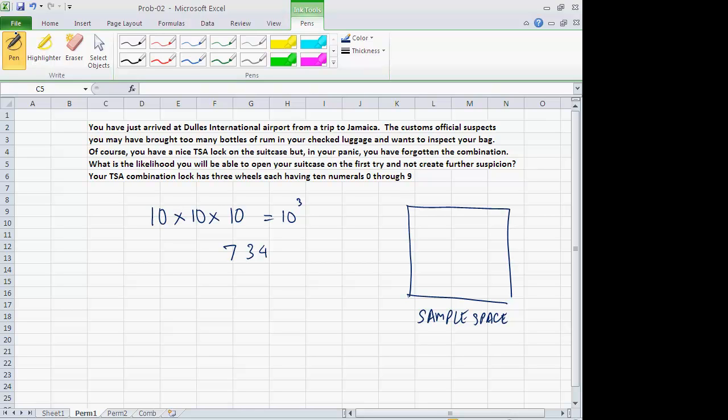In general, if you have n options open on any one trial, and there are r trials, and you're allowed to repeat the options on every trial, the total number of alternatives that you have for the sample space is simply n to the power r.